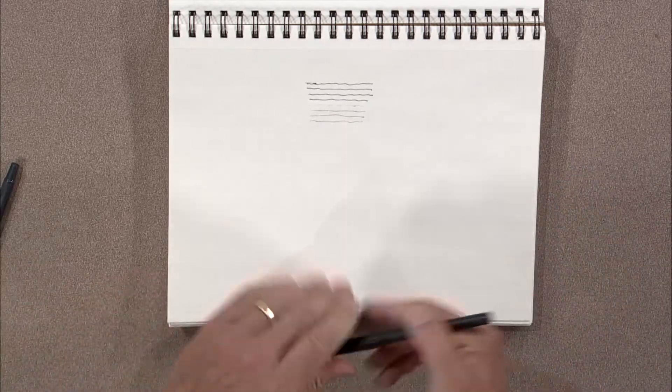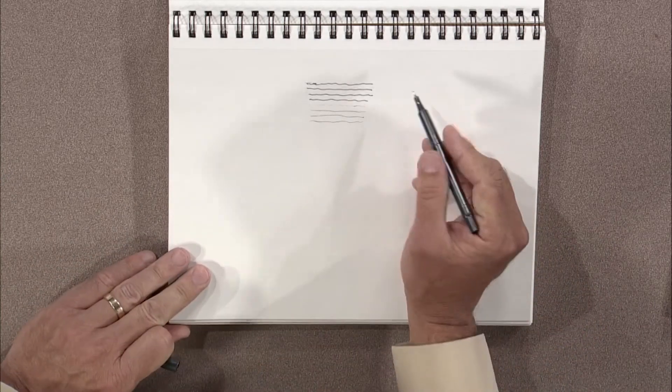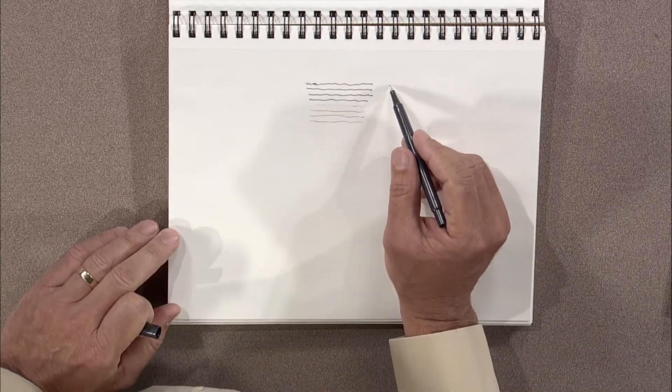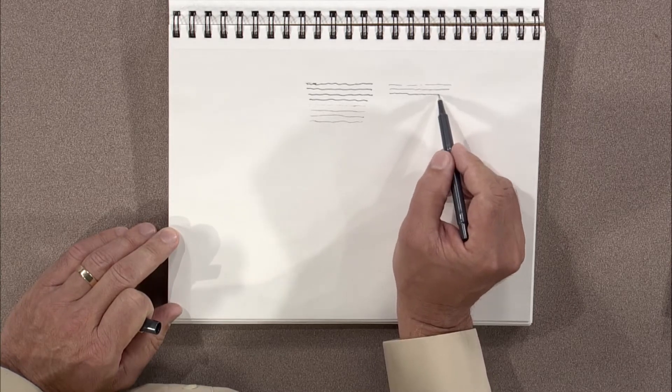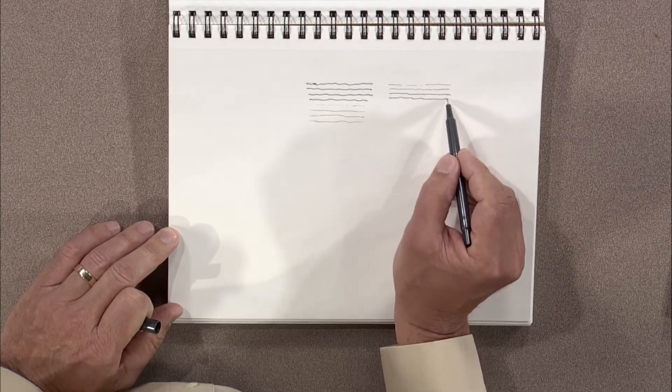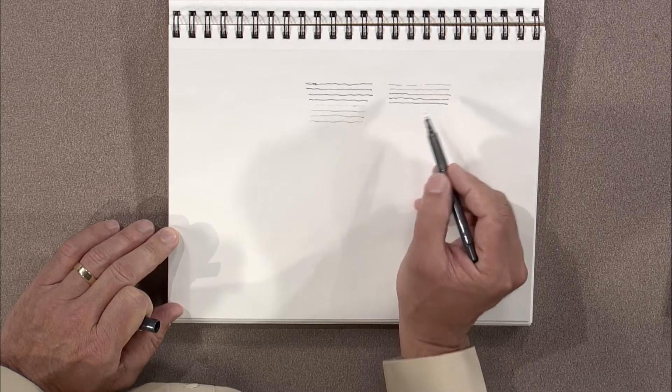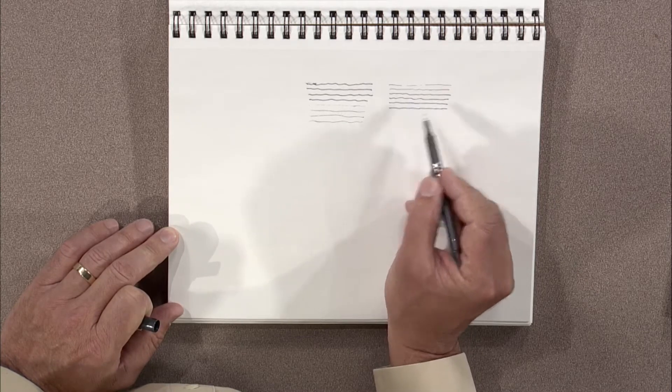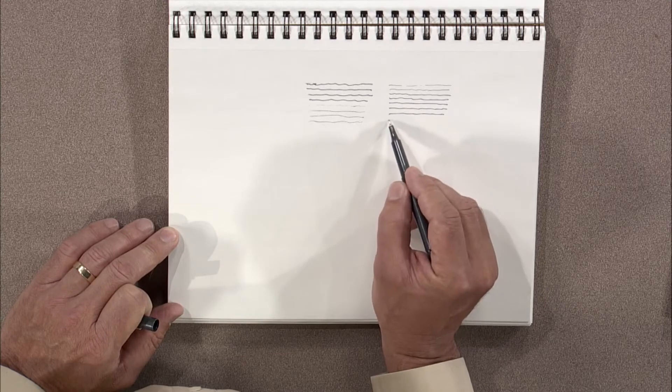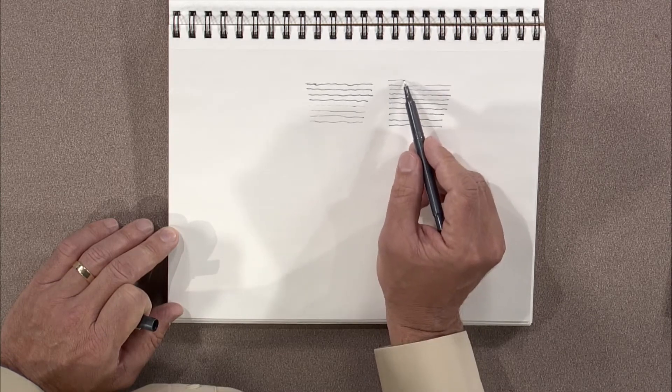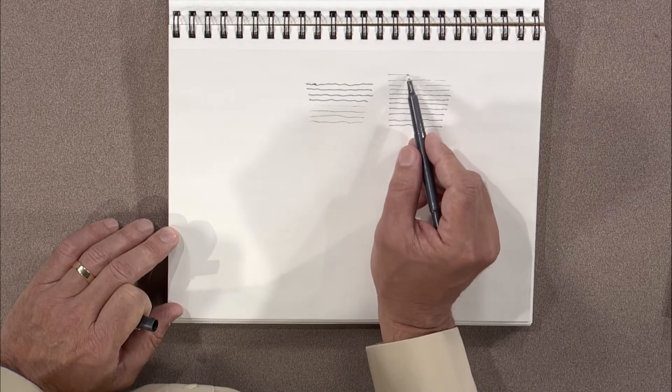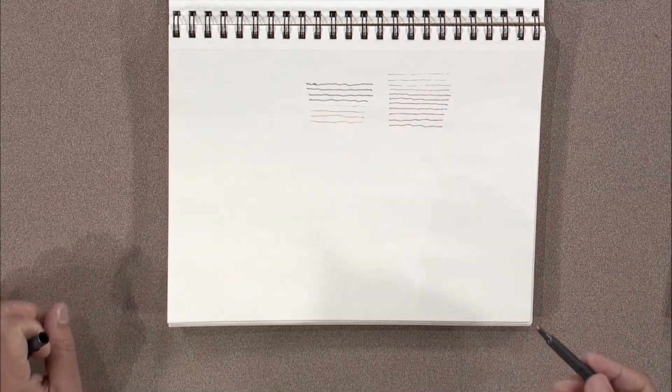Whereas with a felt tip pen, I like to challenge myself to get multiple line weights. So I'll start with, and I'll start to bear down a little bit more. And maybe turn the pen a little bit more on its side. And now I'm feeling comfortable with it, so I come back up here and maybe get some of the fainter ones.